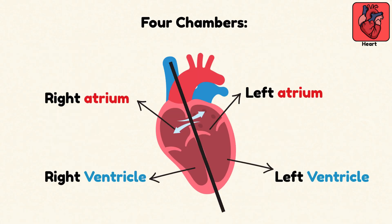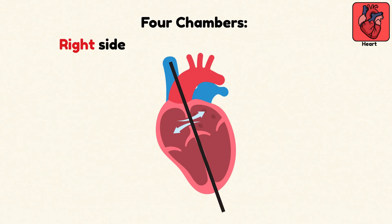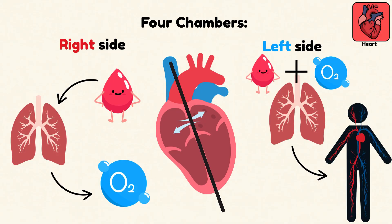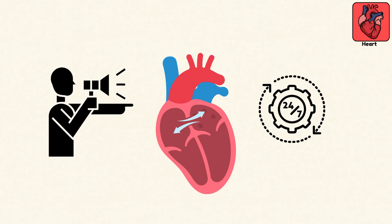Inside are four chambers working like synchronized pistons. The right side sends blood to the lungs for oxygen. The left side blasts it out to the rest of the body. This loop happens constantly without a single command from you.